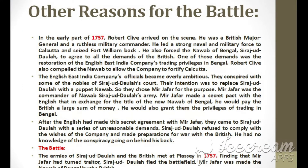In the early part of 1757, Robert Clive arrived on the scene. He was a British major general and a ruthless military commander. He led a strong naval and military force to Calcutta and seized Fort William back. He also forced the Nawab of Bengal, Sirajud Daula, to agree to all the demands of the British. One of those demands was the restoration of the English East India Company's trading privileges in Bengal. Robert Clive also compelled the Nawab to allow the company to fortify Calcutta.